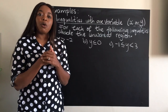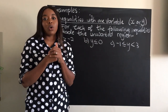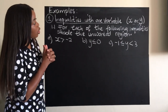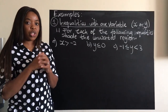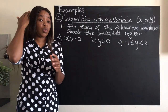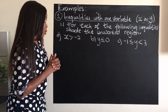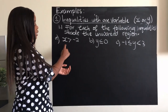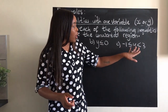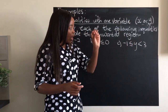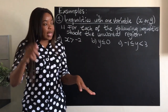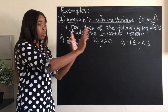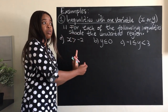Starting with inequalities that involve only one variable. The question here is: for each of the following inequalities, shade the unwanted region. Remember, we are shading the unwanted region — we always shade the unwanted region in linear programming. We have three examples: (a) x is greater than negative 2; (b) y is less than or equal to 0; and (c) negative 1 is less than or equal to y, but y is strictly less than 3.